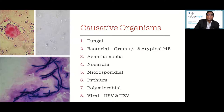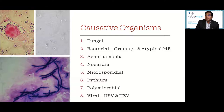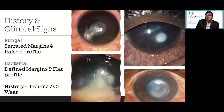Causative organisms include a whole list: fungus, gram-positive bacteria, gram-negative bacteria, atypical mycobacteria, acanthamoeba, nocardia (a filamentous bacteria), microsporidia, pythium, and polymicrobial combinations. The two major forms in the developing world are fungal and bacterial keratitis. If you can differentiate between these two clinically, half your job is done. I'll also briefly cover HSV keratitis based on pre-registered delegate feedback.